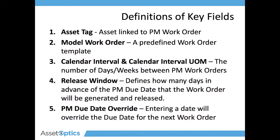The calendar interval and the interval unit of measure is the number of days or weeks between the PM work orders. The release window defines how many days in advance of the PM due date that the work order will be generated and released.